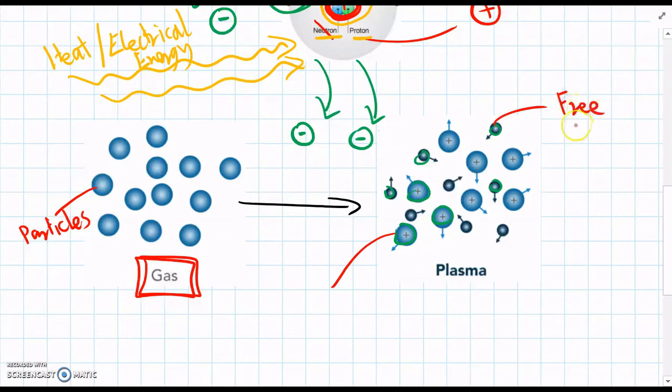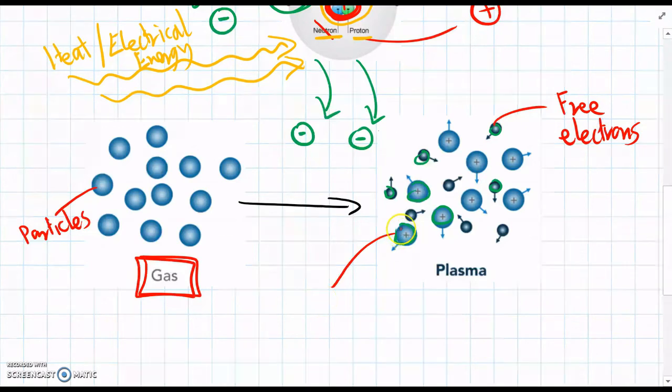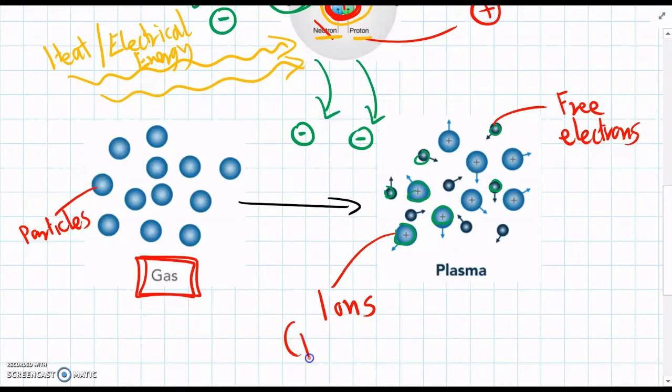So we have three electrons, and we have atoms with a positive charge. And these are called ions. Positively charged atoms.